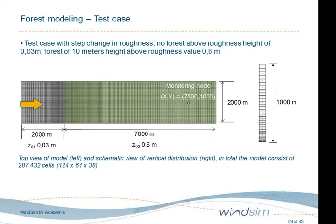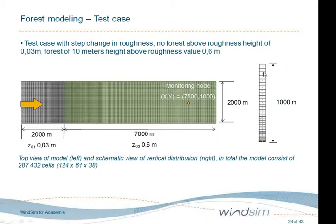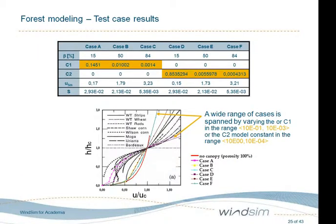Forest modeling: we started to model forest back in 2005 using a simple setup for validation. Wind comes in from the left through an inlet zone into a green forest area, monitoring profiles some kilometers downstream. The forest is only 10 meters high — down at the very first cells — with a large buffer zone on top reaching 1,000 meters. The forest model includes porosity, friction forces, and turbulence parameters. Back in 2005 we tested various forest types with various densities, tuning friction coefficients to reproduce measurements from canopies. The velocity profiles show a large spread above the canopy, and model constants range over several decades — implying enormous sensitivity on how you set them. This is still an area where knowledge is lacking.